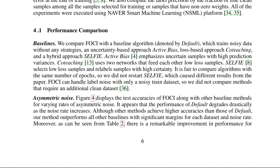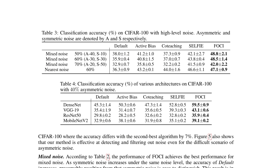It's important to understand the baselines they compared against. Active Bias (reference 4) emphasizes uncertain samples with high prediction variance. Co-teaching uses two networks that feed each other low-loss samples from the other network. Selfie selects low-loss samples and relabels samples with higher uncertainty. More detailed results across different model types confirm that FOCI was more efficient than the other methodologies considered in this paper.